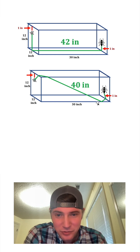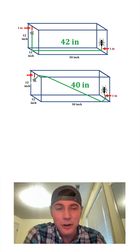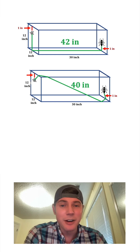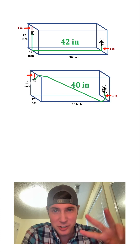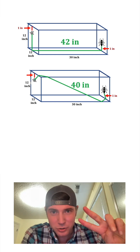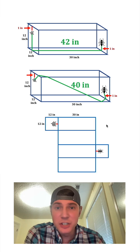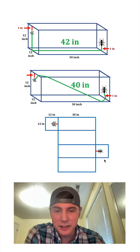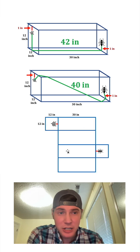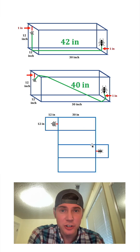If you want to try to figure out how this 40 inches is found, pause it right now because I'm going to show the answer in 3, 2, 1. To visualize this, let's break out the box like this. This has a special name in geometry — it's called a net.